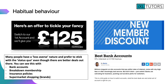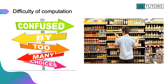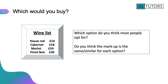The final reason is difficulty of computation — you are faced with so many different choices that you become confused by the amount of options available. Here's another example: there are four different options on a wine list. Which one do you think most people would opt for, and do you think the markup is still similar for each option? I'll give you about 30 seconds to think about that.